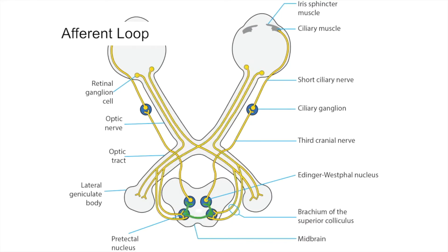Axons leave the pre-tectal nuclei and cross to nuclei on the other side of the dorsal midbrain so that the signal is distributed equally to both parasympathetic Edinger-Westphal nuclei.